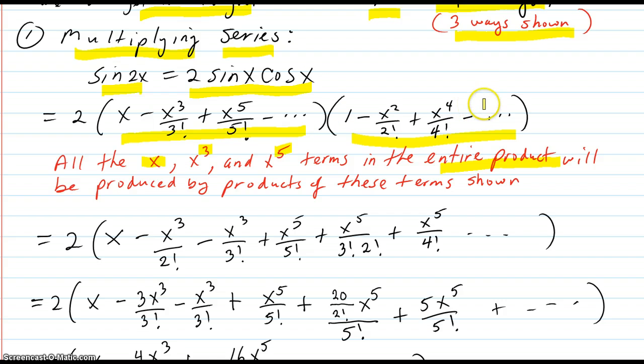And over here, x⁶ is the next one. x⁶ times x is going to be x⁷. So all the x, x³ and x⁵ terms in the entire product will be produced by products of these terms shown.